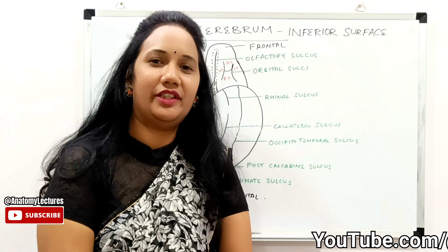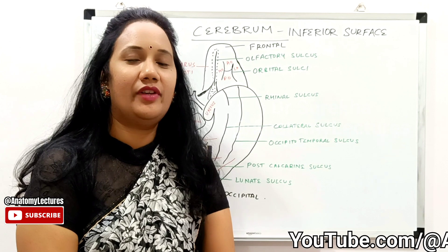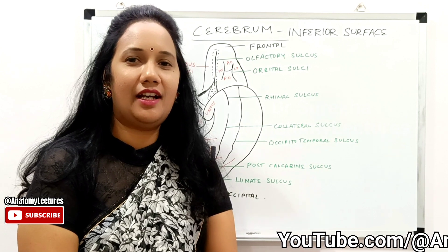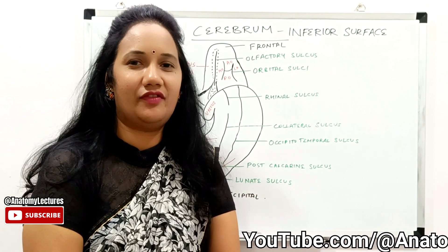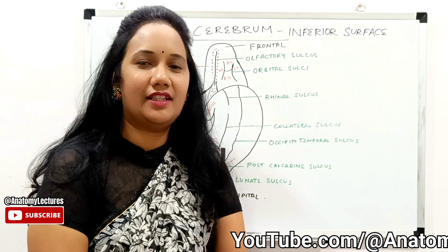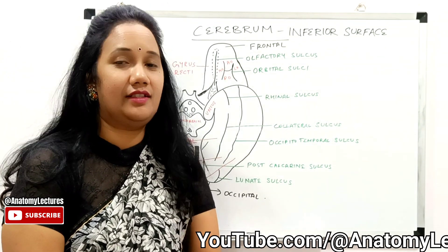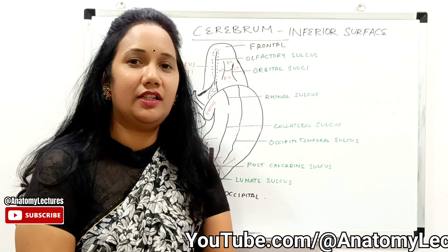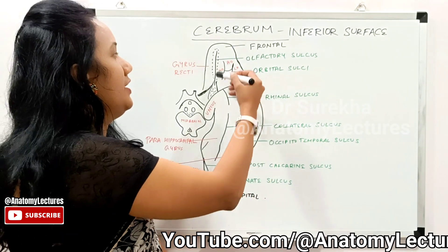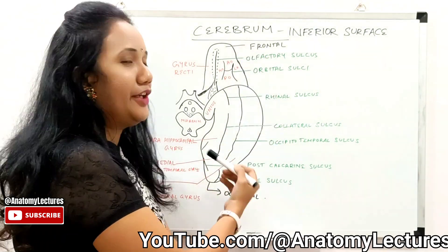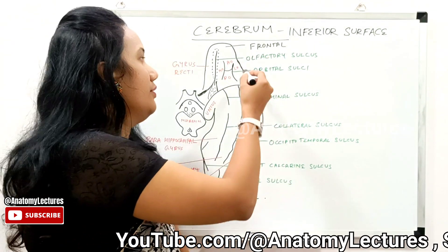Welcome back. In this video, let us discuss the various sulci and gyri present on the inferior surface of the cerebral hemisphere. This inferior surface is divisible into an orbital surface anteriorly and a tentorial surface posteriorly.